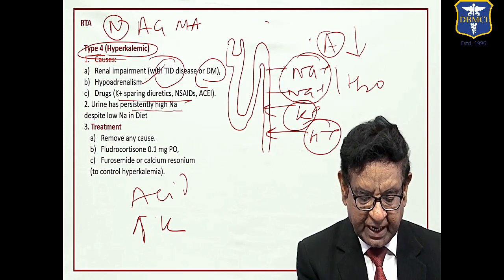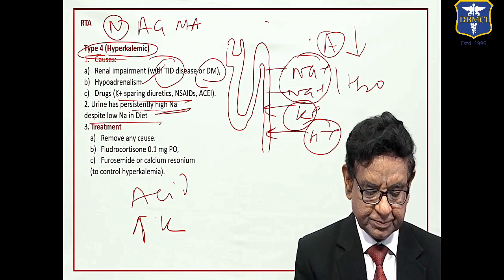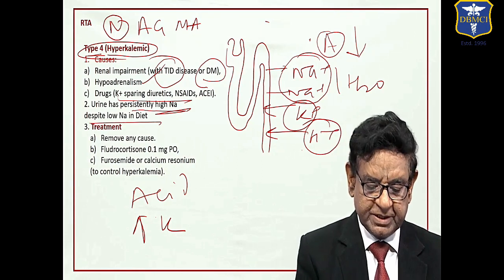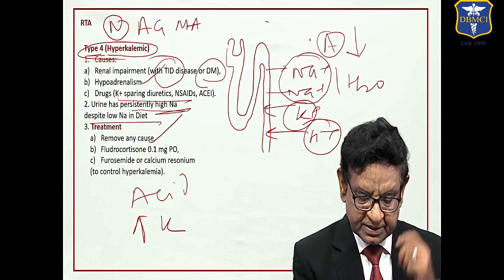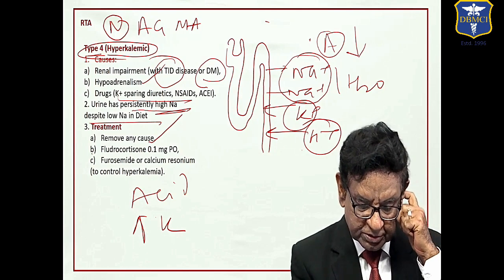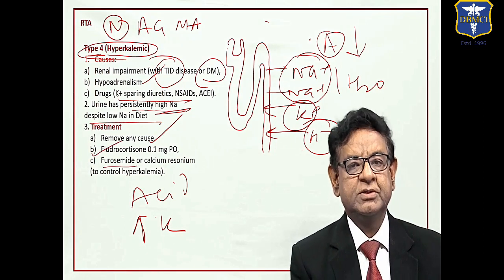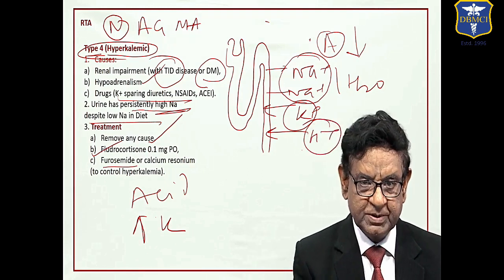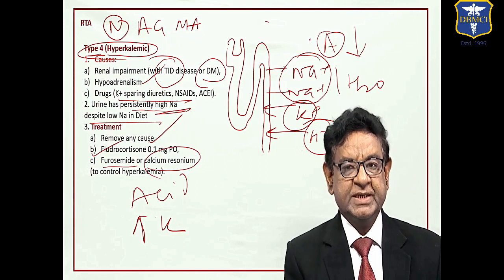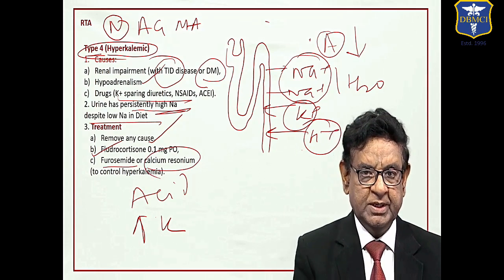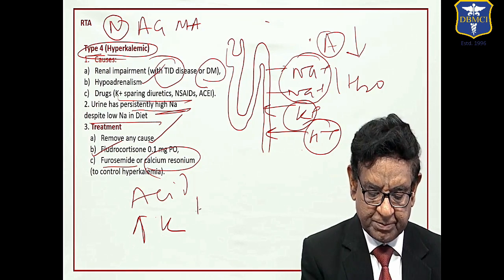Urine has persistently high sodium despite low sodium diet. In treatment, we can remove the cause. If it is a drug like ACE inhibitor or NSAID, you can use fludrocortisone 0.1 mg PO, or we can use furosemide to cause loss of potassium from the body, or we can use oral potassium chelating resin to control hyperkalemia.